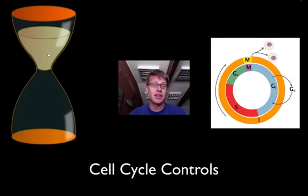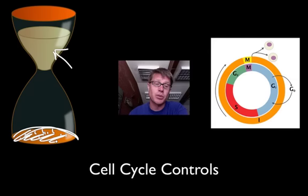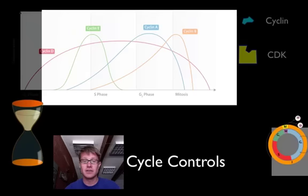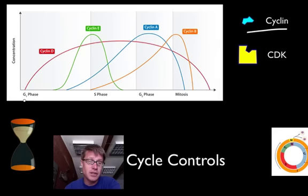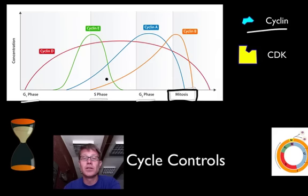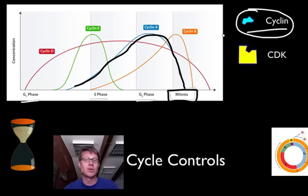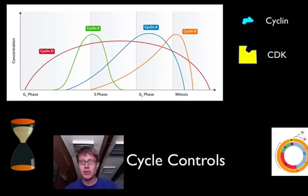How does a cell know when it's time to divide? The best analogy is it works like an hourglass clock. There are little proteins inside a cell, and as those proteins accumulate throughout the life of the cell, eventually you reach a critical number at the bottom. Once we have enough, it tells the cell to advance to the next stage. Those proteins are called cyclins. For example, cyclin A and B: cyclin A builds up during the S phase and drops off right as the cell goes into the mitotic phase. Cyclins accumulate like sands through an hourglass as the cell moves through the cell cycle.